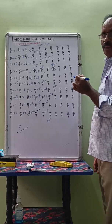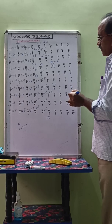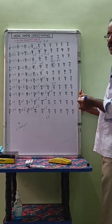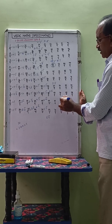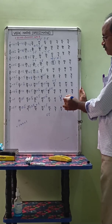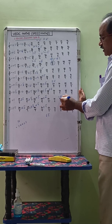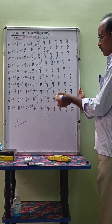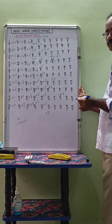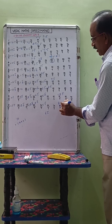73 by 9 equals 8.1 bar. Next, 79 by 9: sum of the digits — 7 plus 9 equals 16, 1 plus 6 equals 7, so 8.7 bar. 80 by 9 equals 8.8 bar.